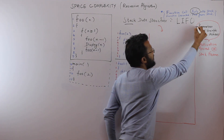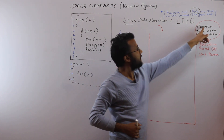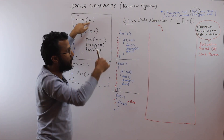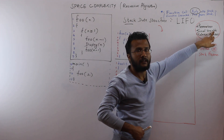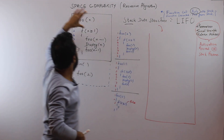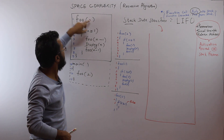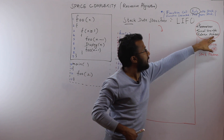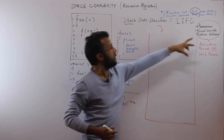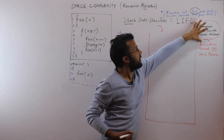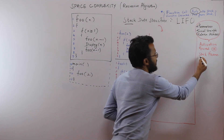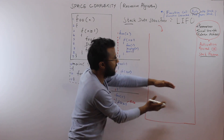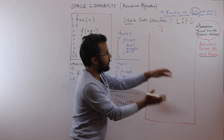What do you push into the stack? There are three things: first, the list of formal parameters — in this case, the argument n. Second, any local variables (there are none in this function). Third, the return address — where control should return once that function instance completes. These three things combined are called an activation record or stack frame.